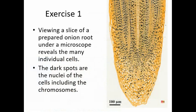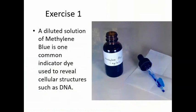If we view a slice of a prepared onion root under a microscope it reveals the many individual cells. The dark spots are the nuclei of the cells including the chromosomes, the primary genetic material. A diluted solution of methylene blue is one common indicator dye used to reveal cellular structures such as DNA.